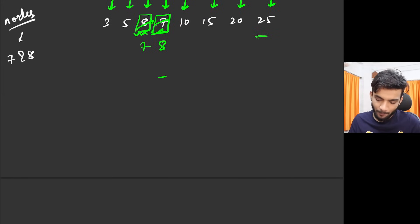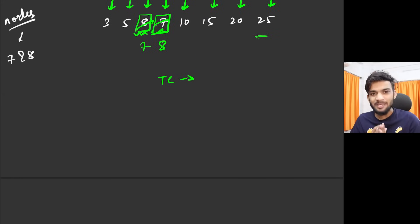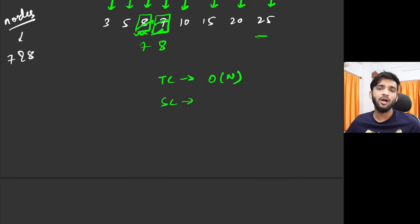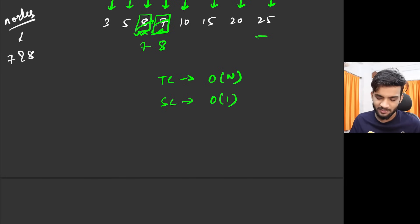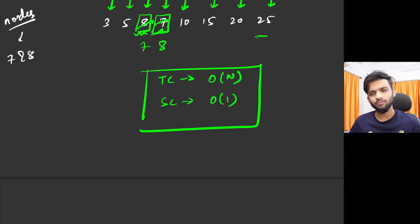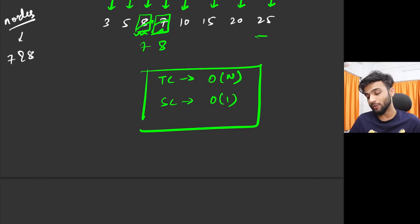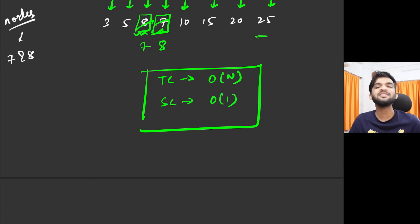The time complexity is O(n) — a simple inorder traversal doing all business while visiting. The space complexity is O(1), since we generally don't count recursive stack space. If the interviewer counts it, you can mention Morris traversal which achieves O(1) space explicitly.